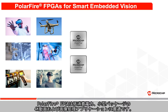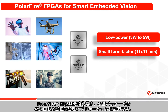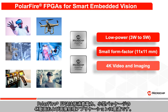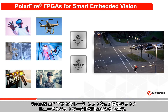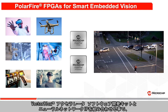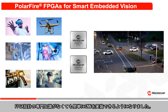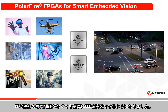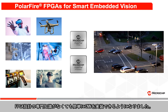PolarFire FPGAs are great for delivering low power, small form factor, 4K video and imaging applications. Now with the VectorBlocks Accelerator Software Development Kit and Neural Network IP, it is very easy to deploy CNNs without prior FPGA design expertise.